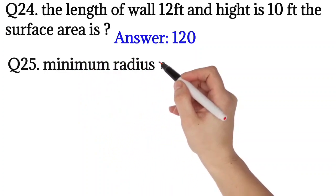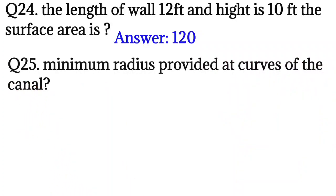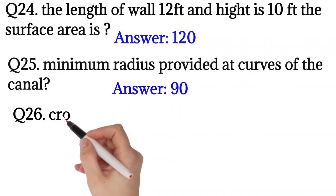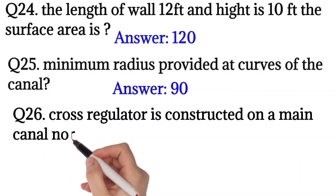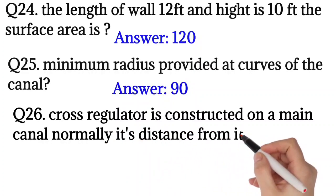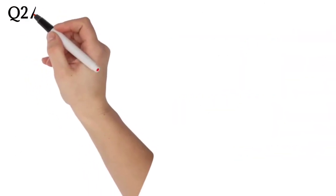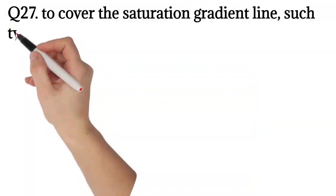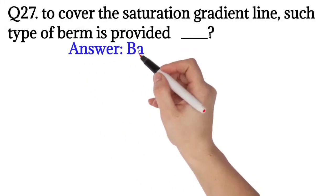Question number 25: Minimum radius provided at curves of the canal is 90. Question number 26: Cross regulator is constructed on a main canal. Normally the distance from head works is 10 to 12 kilometers. Question number 27: To cover the saturation gradient line, such type of berm is provided? The answer is back berm.